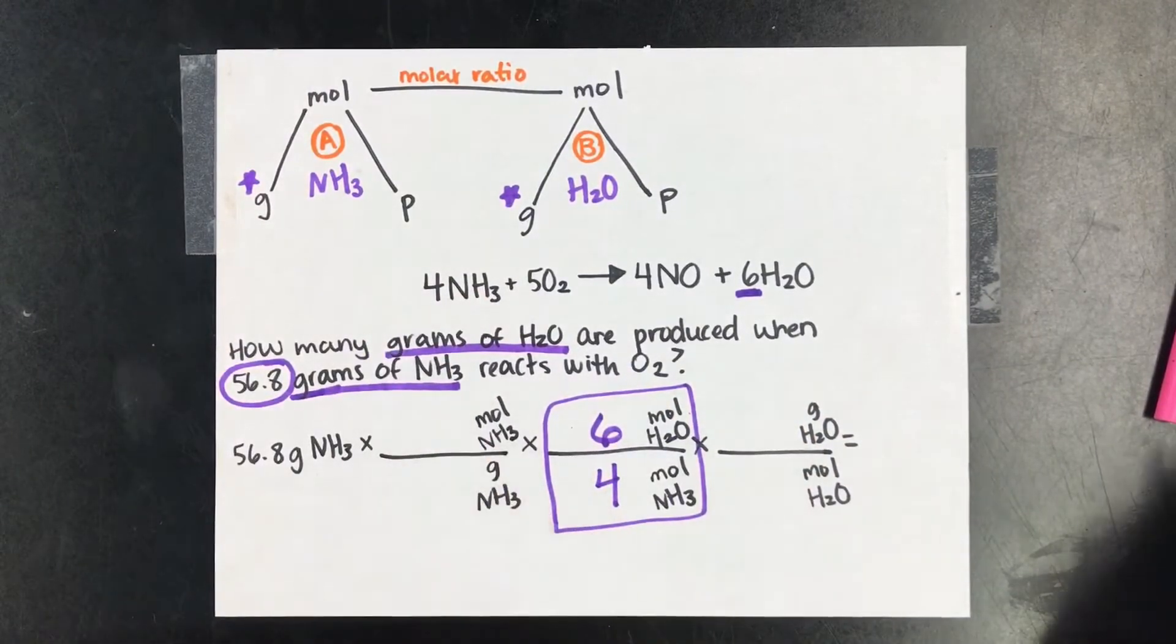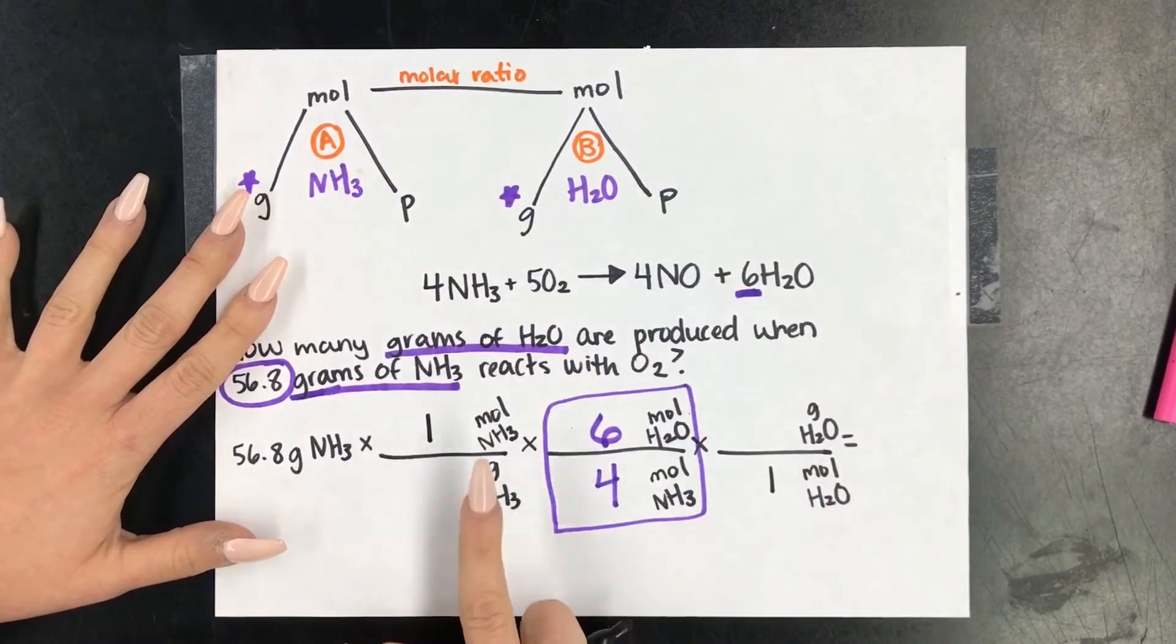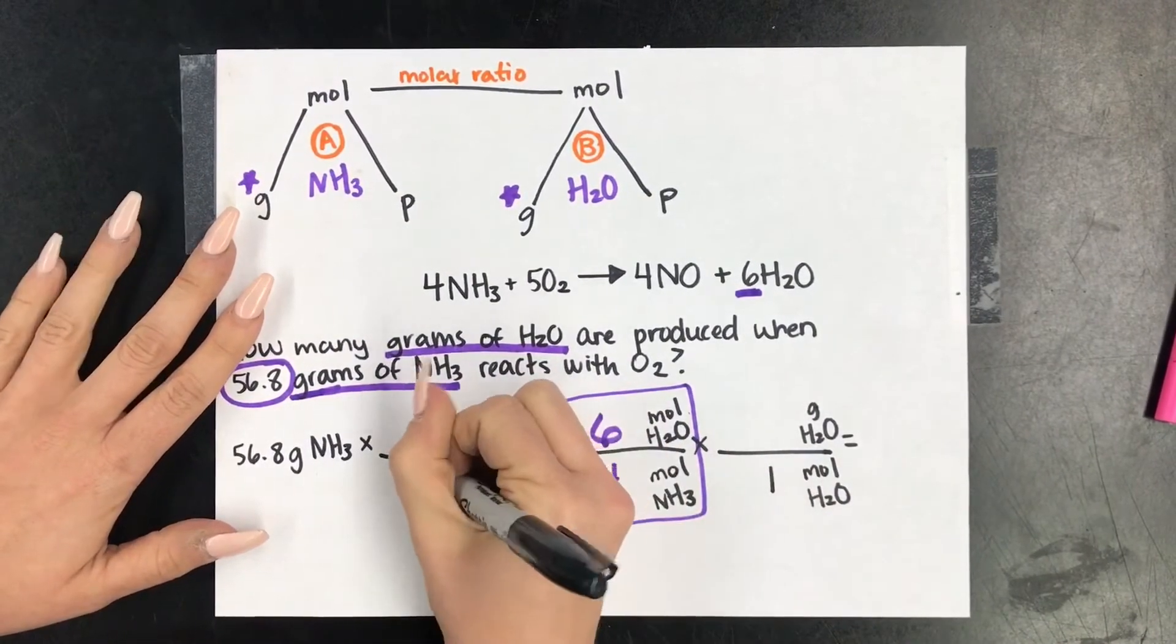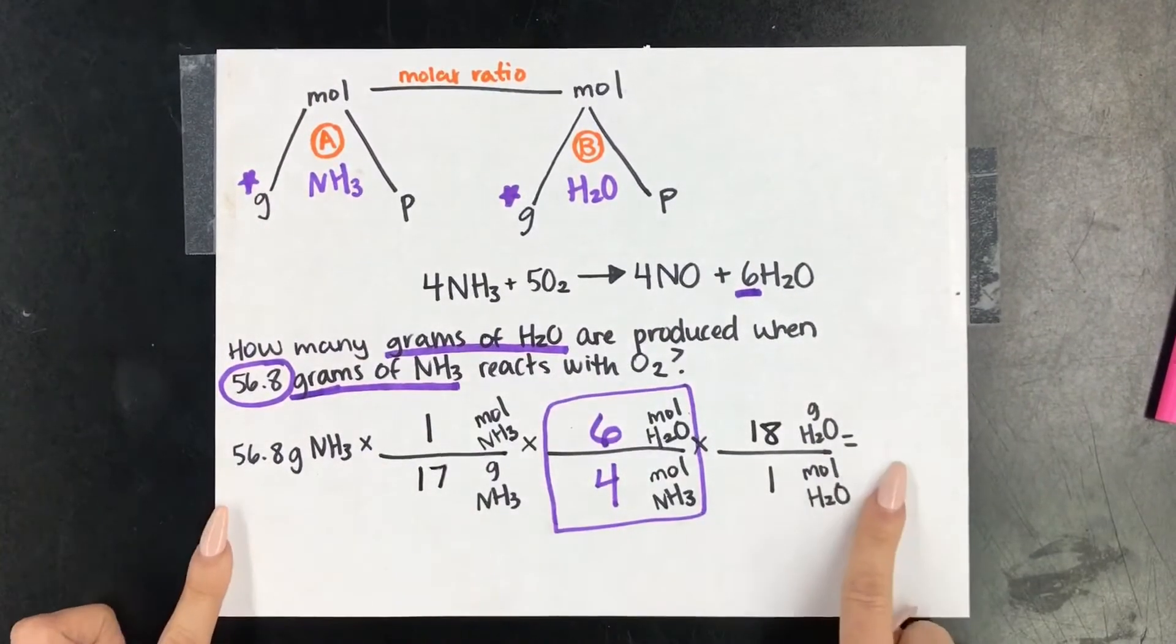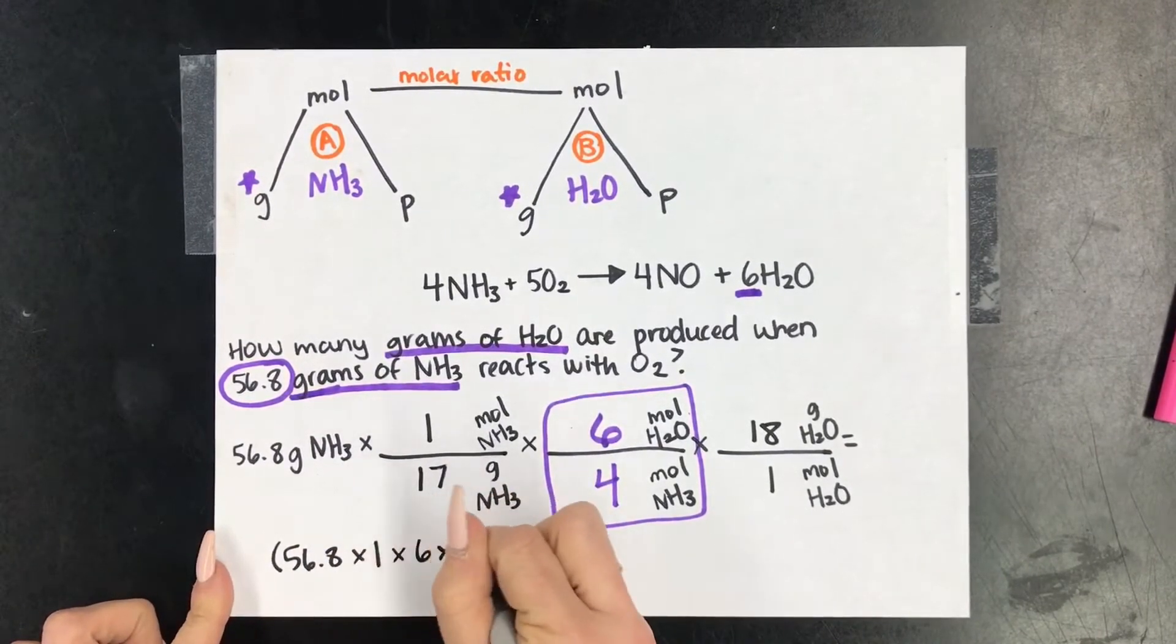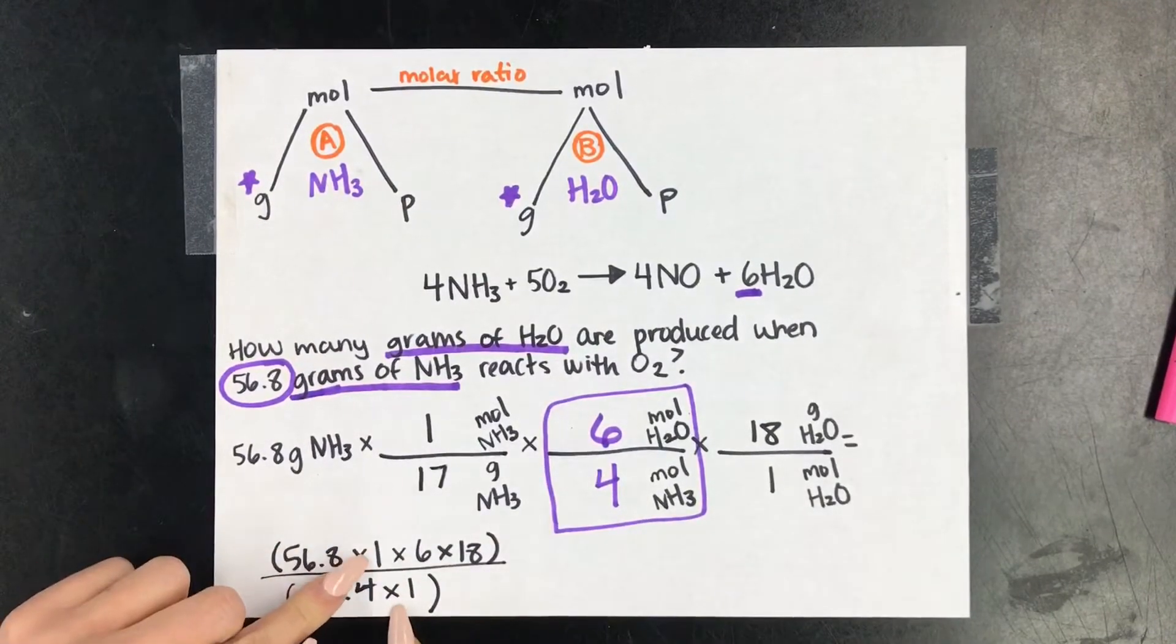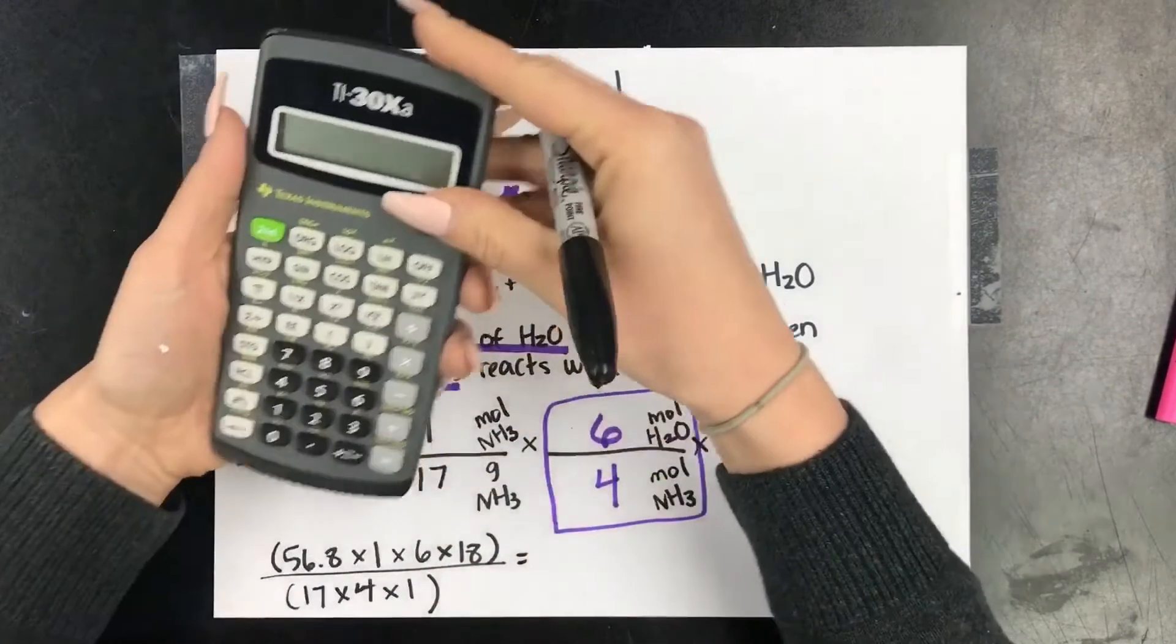So now outside of that, our rules go back to exactly the same as they were before. Mole is one, mole is one. Grams tells me to find molar mass. Here, we're finding the molar mass of NH3. Here, we're finding the molar mass of H2O. And again, if you need a refresher on that, look in the first video. Right now, we're just going to set this up by multiplying everything on top, dividing everything on bottom. Again, if you don't include the ones, that's totally fine. I just do it to show students where everything is coming from.